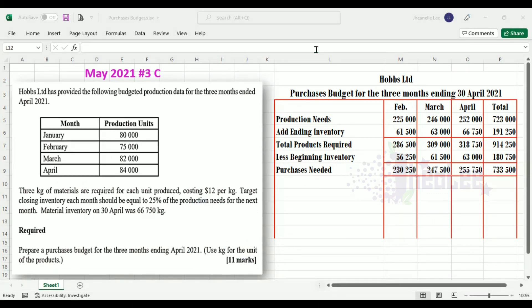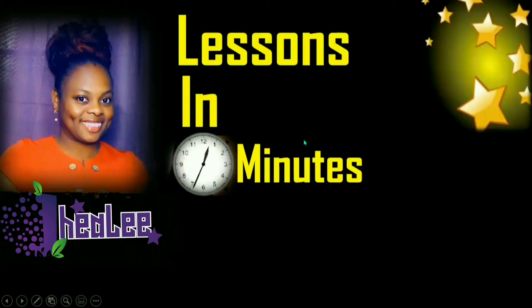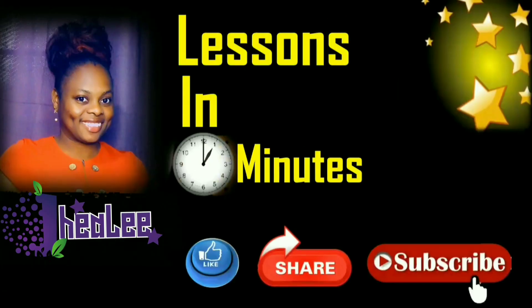To recap: to prepare the Purchases Budget, pick up your production needs, add your desired ending inventory to get total production required, then subtract your beginning inventory. That gives you the purchases needed for the period to meet customer demand. Like, share, and don't forget to subscribe.